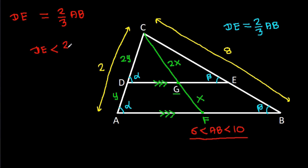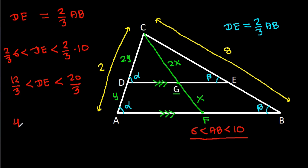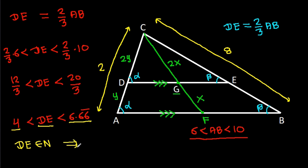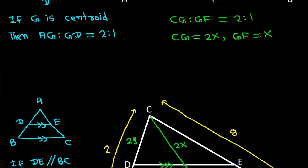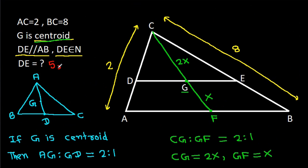So DE will be less than (2/3) times 10 and greater than (2/3) times 6. That gives 12/3 less than DE less than 20/3, which is 4 less than DE less than 6.66. Since DE belongs to natural numbers and DE is between 4 and 6.66, DE can be 5 or 6.